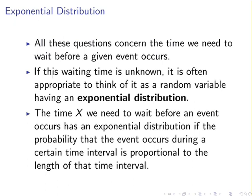All of these questions concern the time we need to wait before a given event occurs. If this waiting time is unknown, it is often appropriate to think of it as a random variable having an exponential distribution. The time X has an exponential distribution if the probability that the event occurs during a given time is proportional to the length of the time period — this is actually quite an important statement.